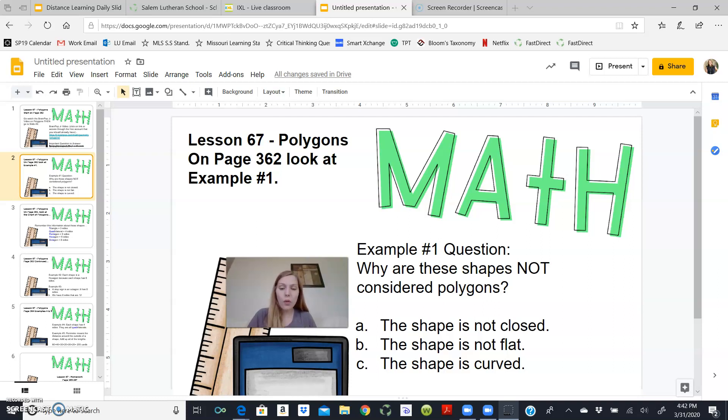If we moved over and looked at shape B, you would be able to determine that that is in fact a three-dimensional shape and therefore it's not flat. If it were just a square, then it would be considered a polygon. And for shape C, you know that that is a circle and a circle does not have any straight lines at all. Because it doesn't have any straight lines and it is curved, it cannot be considered a polygon either.